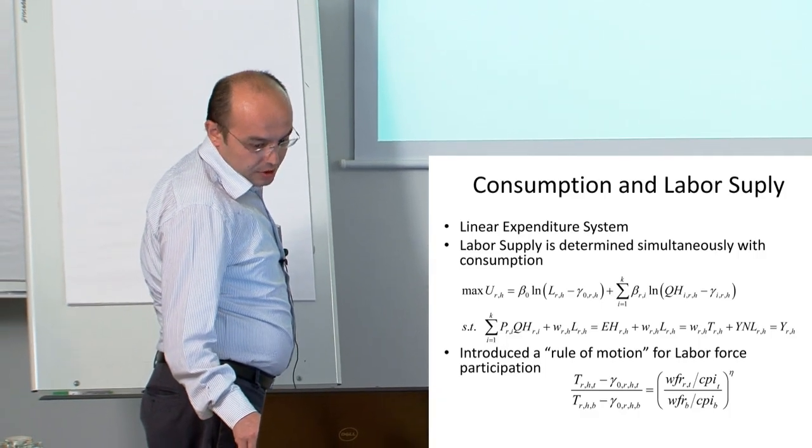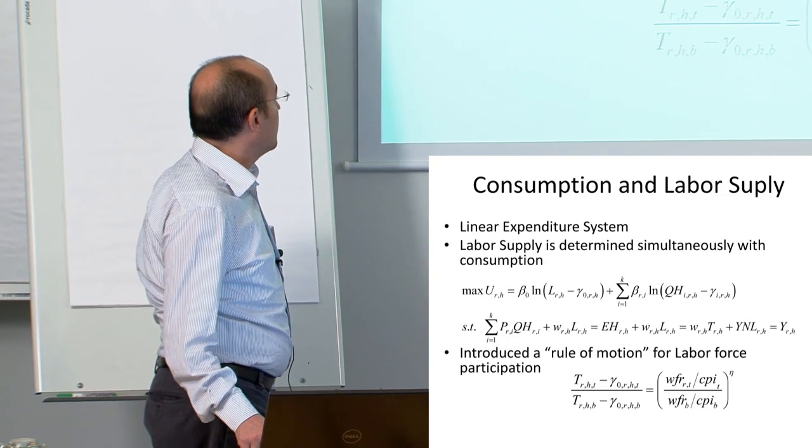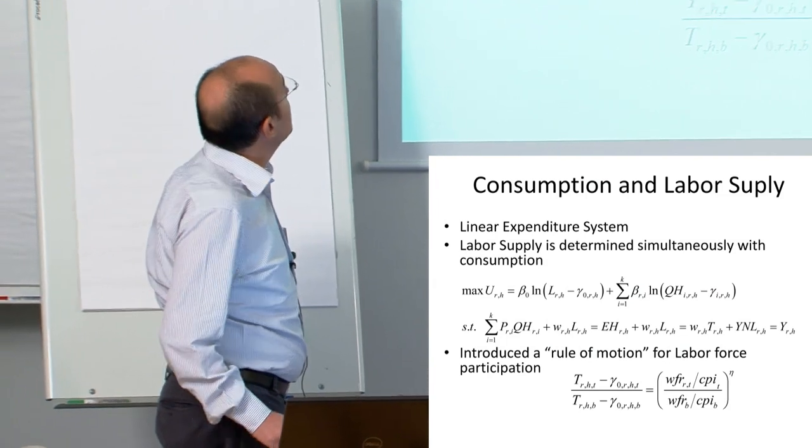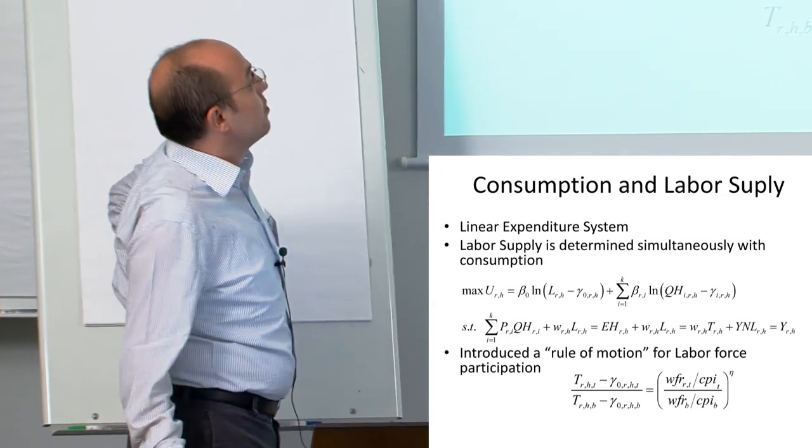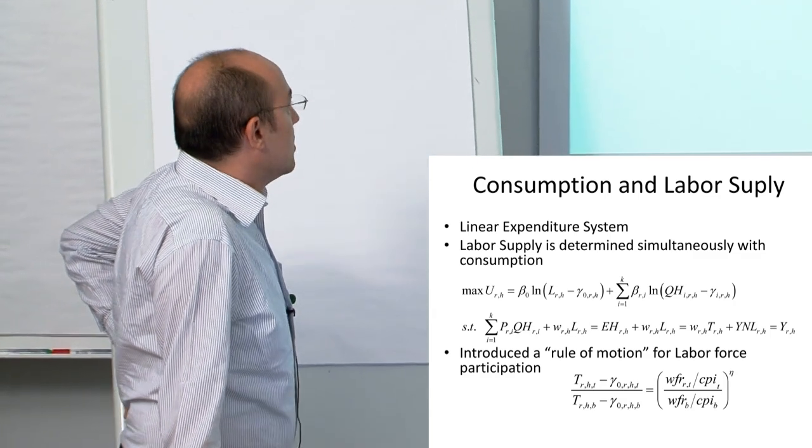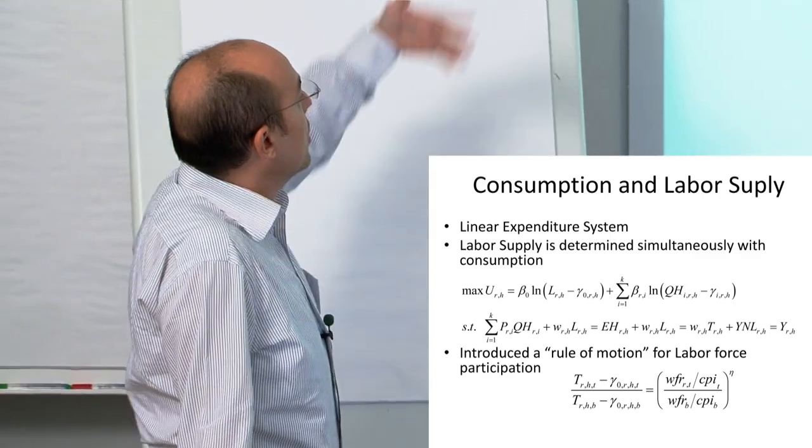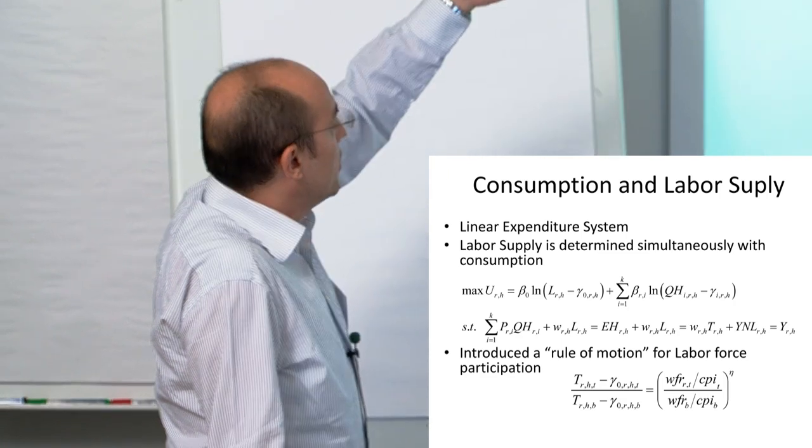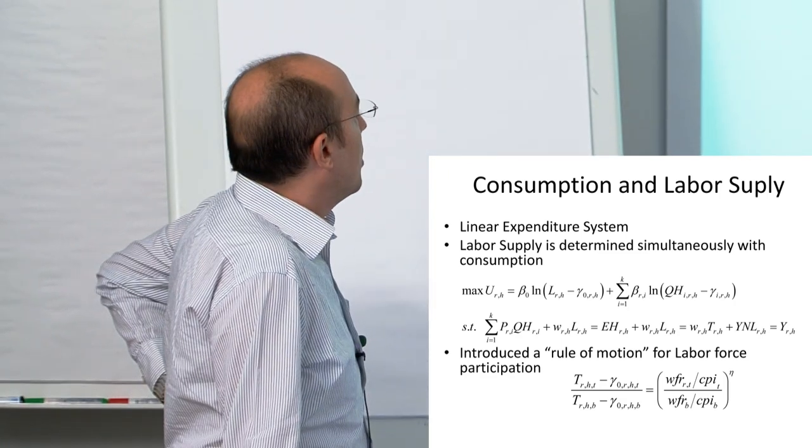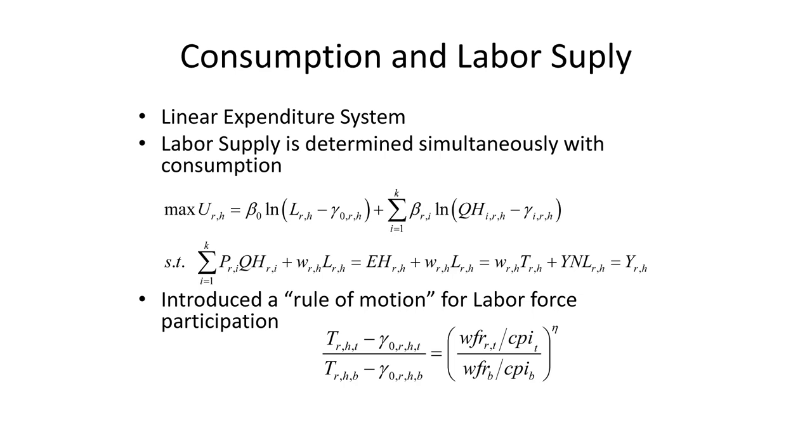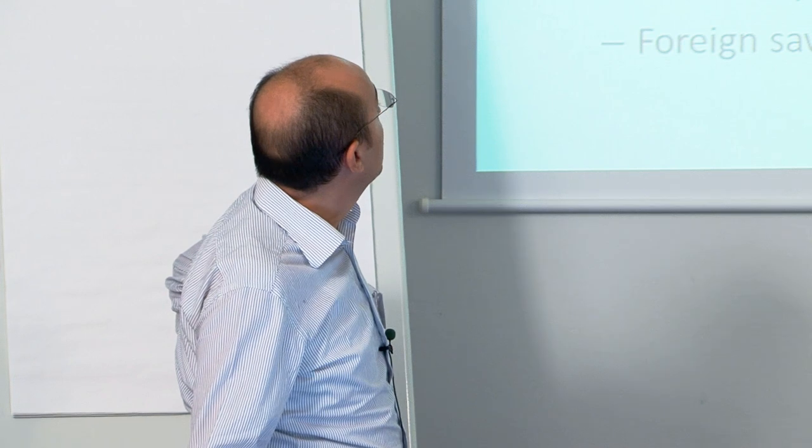For consumption and labor supply, the second difference from the standard IFPRI model is we endogenize labor supply. Leisure enters the utility function. When you solve it, you have a labor supply equation introduced in the model. Labor supply adjusts endogenously, but we need a rule of motion for labor force participation, which is a simple rule.